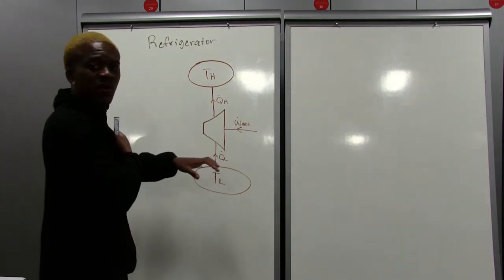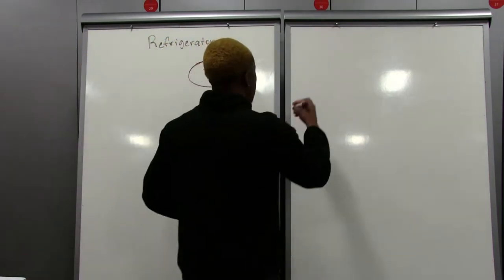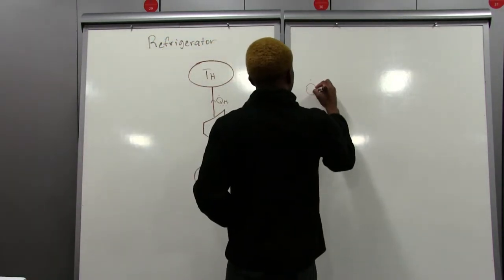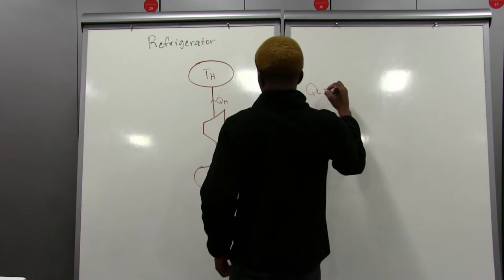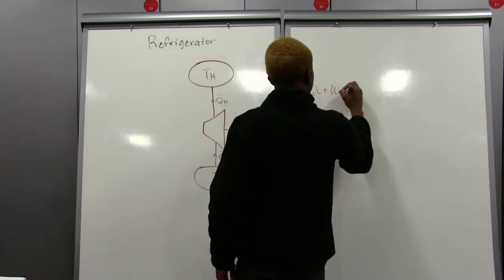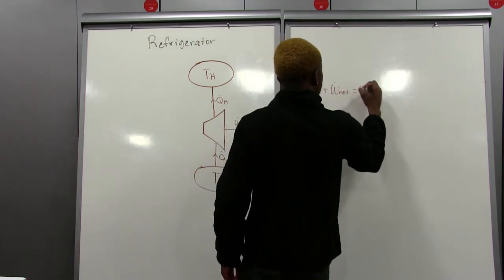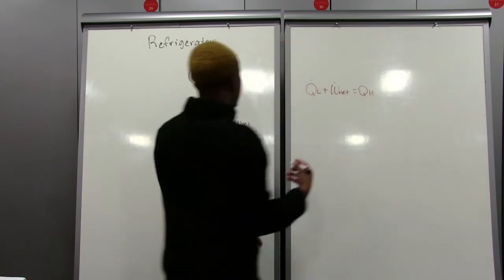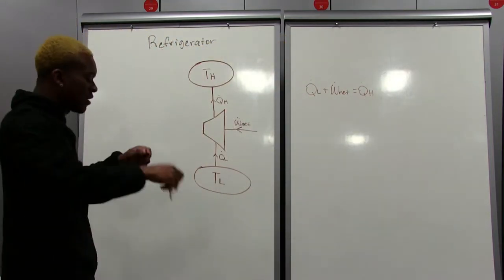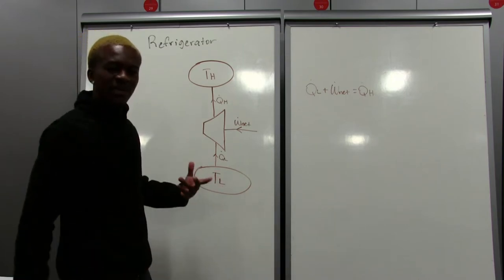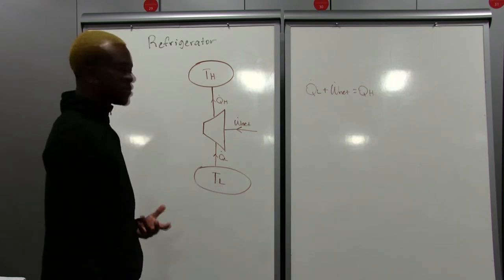Everything going in is equal to everything going out, right? So I can go ahead and say that my QL plus my work net is equal to my QH. That's an equation we can use. And one thing you'll notice is this is basically the same thing that we have for a heat pump. It's sort of doing the same thing.